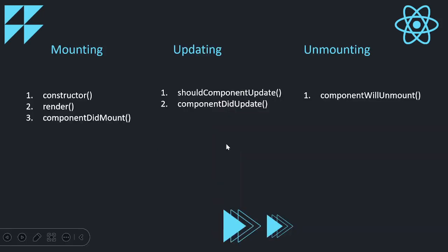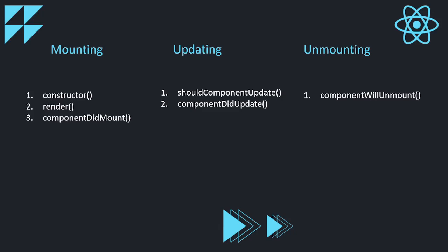In the mount phase we have three main lifecycle methods: constructor, render, and componentDidMount. In the updating phase we have two key methods: shouldComponentUpdate and componentDidUpdate. In the unmounting phase we have one method: componentWillUnmount. So in total there are six different lifecycle methods, and each one will be covered in detail in upcoming videos.